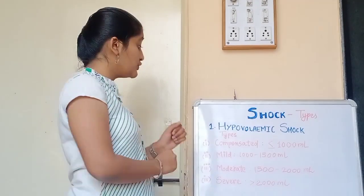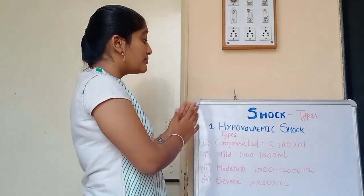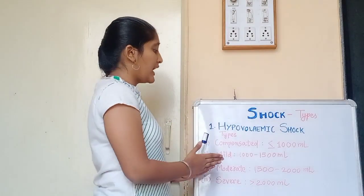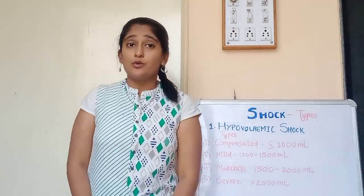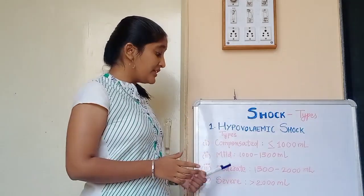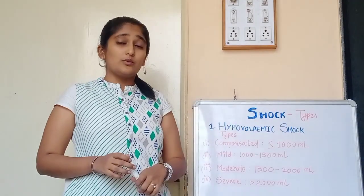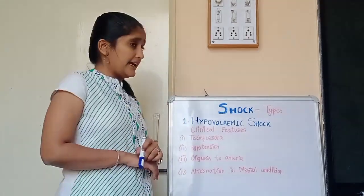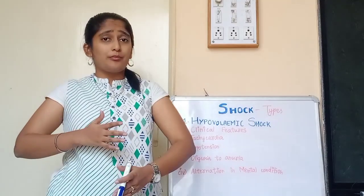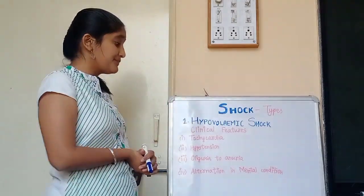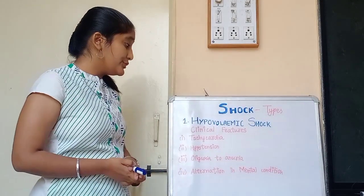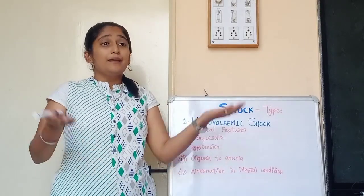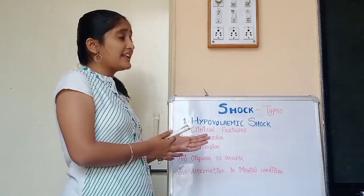The severity of hypovolemic shock depends upon the volume of blood lost, and it is classified into four types: compensated, when blood volume lost is less than 1000 ml; mild, between 1000–1500 ml; moderate, between 1500–2000 ml; and severe, when greater than 2000 ml. Clinical features include tachycardia, hypotension, oliguria to anuria, and alteration in mental condition due to reduced brain blood supply.